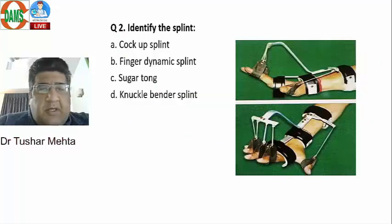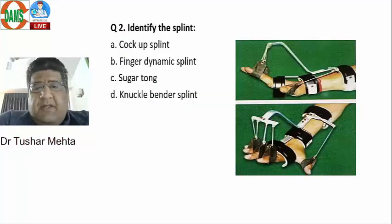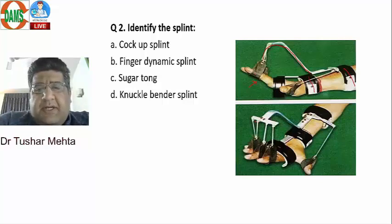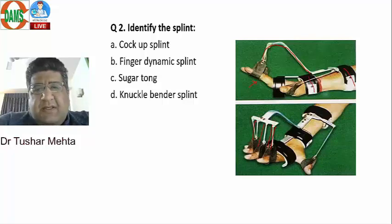Moving to the next question — identify the splint. In this splint, a strap is tied here and here, and the wrist is taken into passive extension. Bands are applied that are connected to the fingers. When the patient flexes the wrist, the rubber bands come into play.